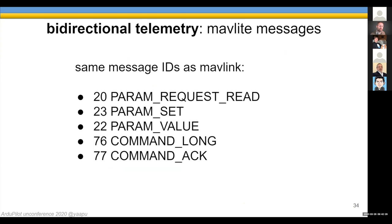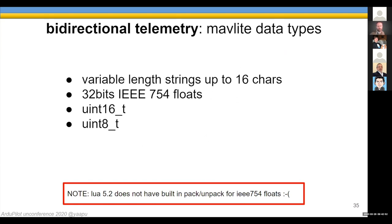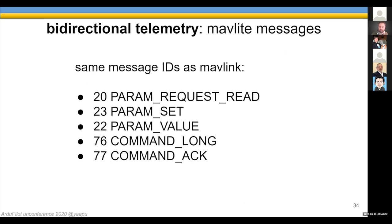The message IDs I use are the same as MAVLink, making it easier for end users to understand. The five message types I've been working with are: param request with, param set, param value, command long, and command ex. The data types supported are variable-length strings up to 16 characters, 32-bit IEEE floats — which was hard since OpenTX doesn't have built-in packing and unpacking for floats, so I had to write it from scratch — unsigned 16-bit integers, and unsigned 8-bit integers.